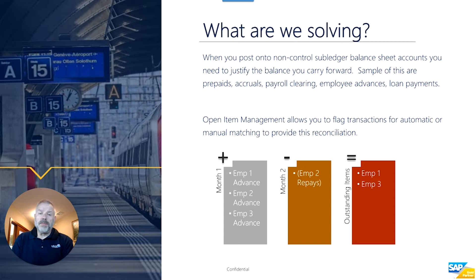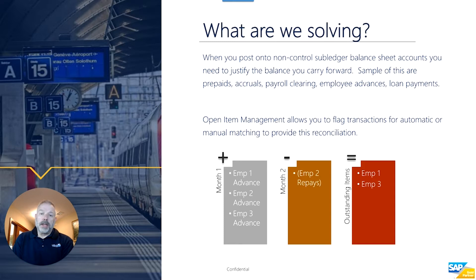Conversely, a subledger control account would be accounts payable, accounts receivable, your inventory, and your fixed assets. You wouldn't use open item management for those because those subledgers already come with all sorts of reports and functionality which allow you to identify the details of your open transactions. For example, at any point in time you could run an open accounts payable or an open accounts receivable report, but without open item management it's harder to get that same visibility for, say, your open employee advances GL account.